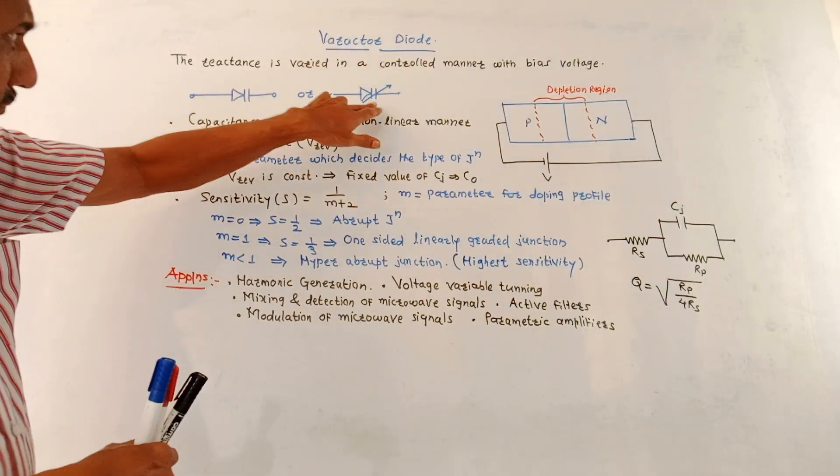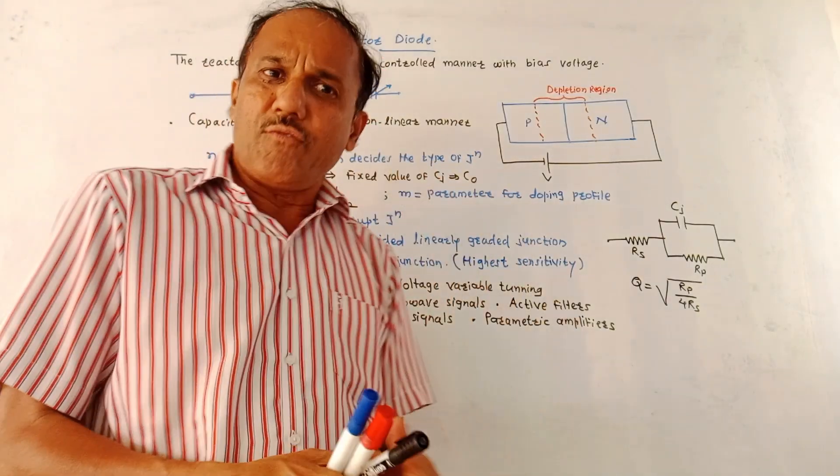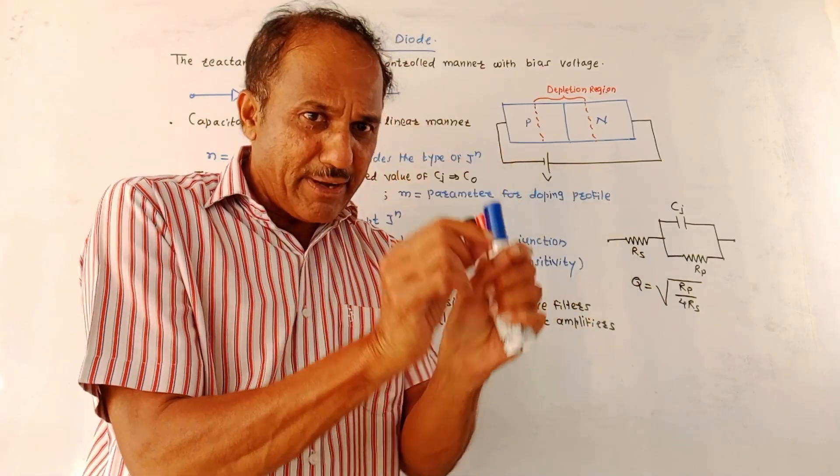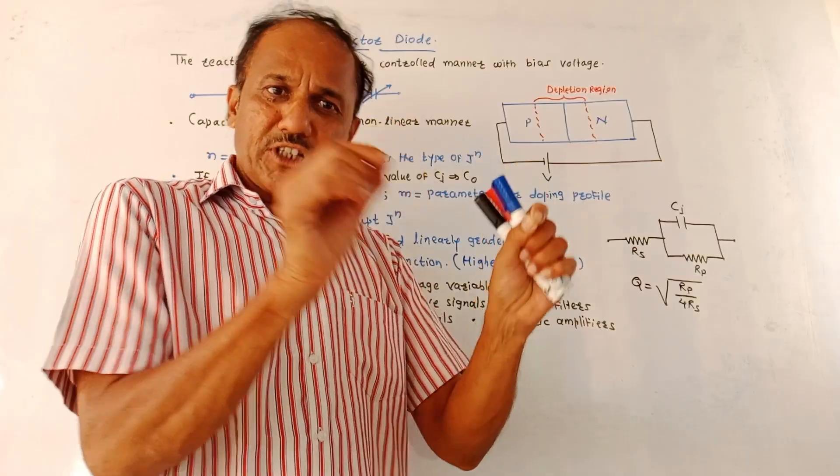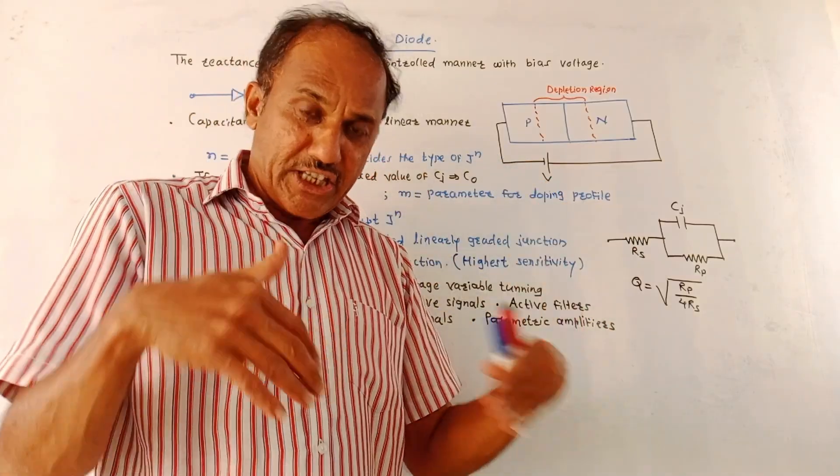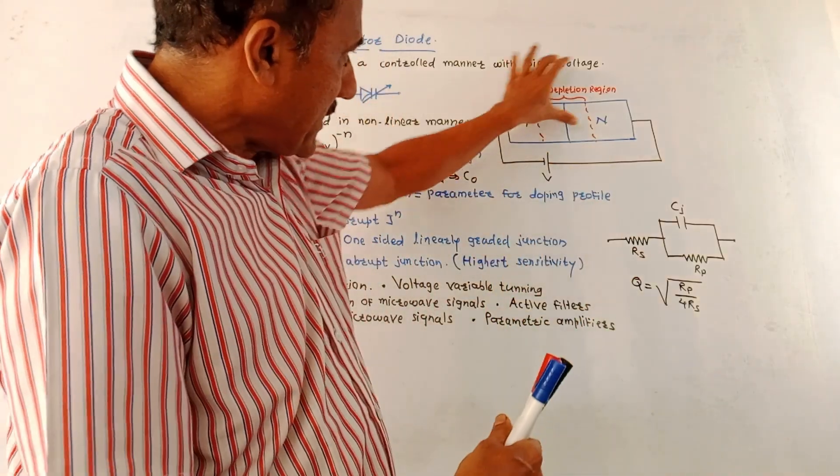This is the symbol of varactor diode. What's the meaning of varactor diode? As the name indicates it is variable reactance diode. That means reactance of the structure is varying, is changing.